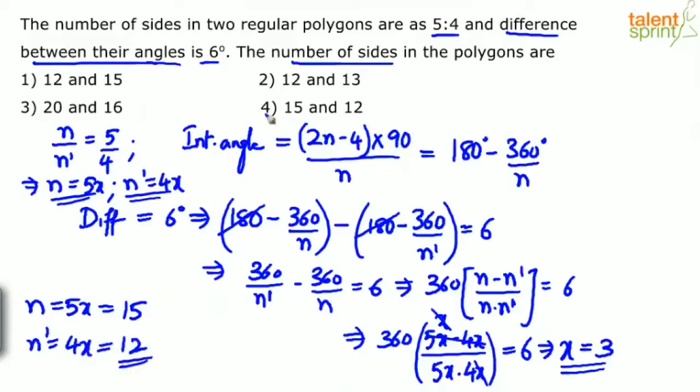If you verify from the options, we know the number of sides are in the ratio 5:4. Option 2 (12 and 13) doesn't give 5:4. 12 and 15 is also not 5:4, it's 4:5 - it has to be in the respective order.